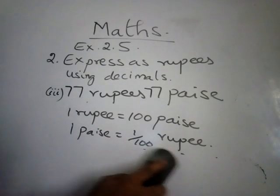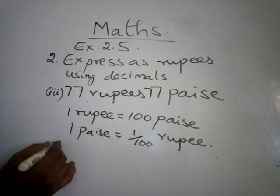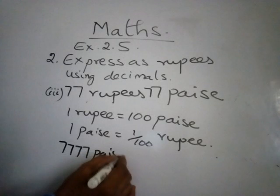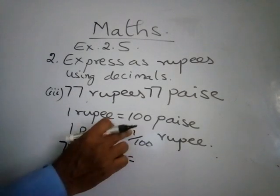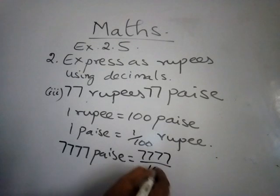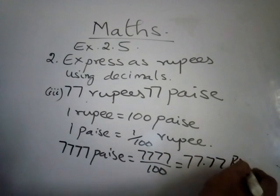Now I am getting the total of 7,777. This should be written as 7,777 paise. How much is rupees? Whatever the number is here, it will go to the numerator. So 7,777 by 100 is nothing but 77.77 rupees.